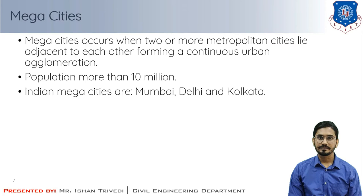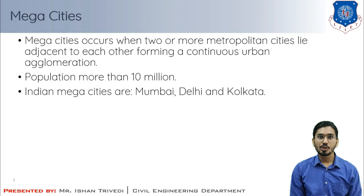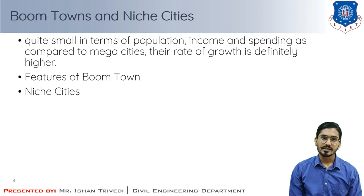Megacities occur when two or more metropolitan cities lie adjacent to each other, forming a continuous urban agglomeration. Usually megacities have a population of more than 10 million, or 1 crore. In India, the megacities are Mumbai, Delhi, and Kolkata.